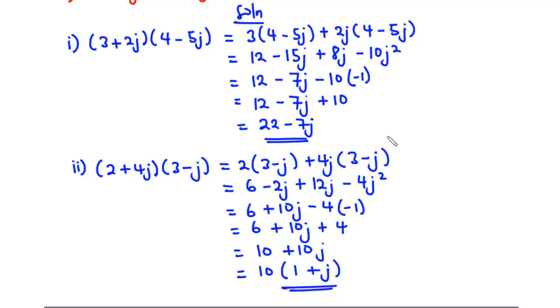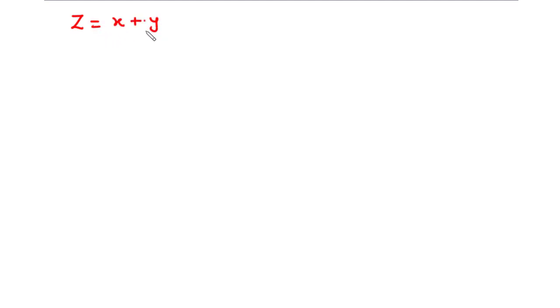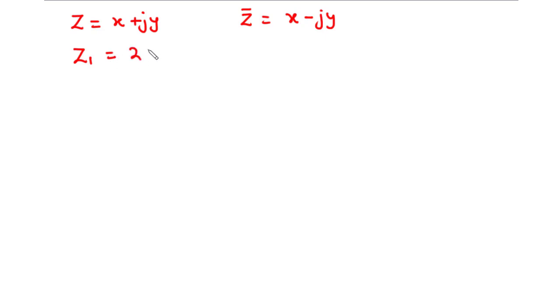Now let's discuss complex conjugate numbers. Given that z = x + jy, we say that the complex conjugate of z is equal to x - jy. For example, if z₁ = 2 + 3j, then the complex conjugate of z₁ is 2 - 3j. Basically, it is the sign that changes.